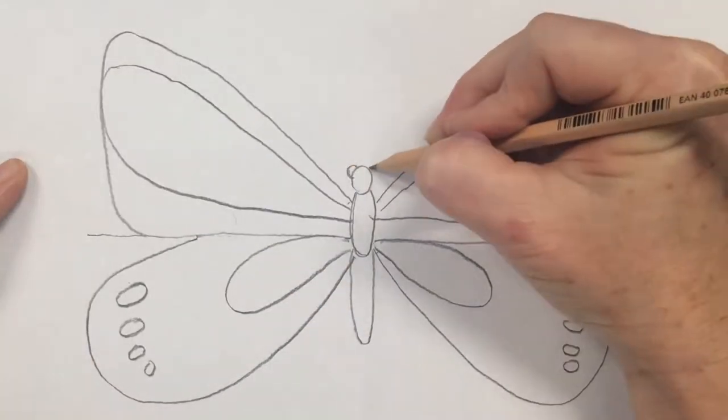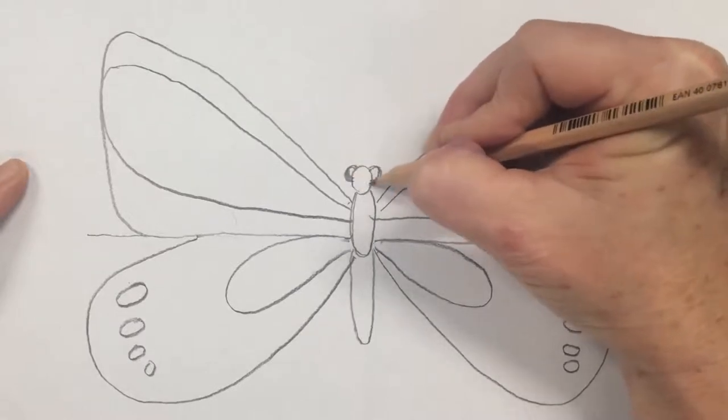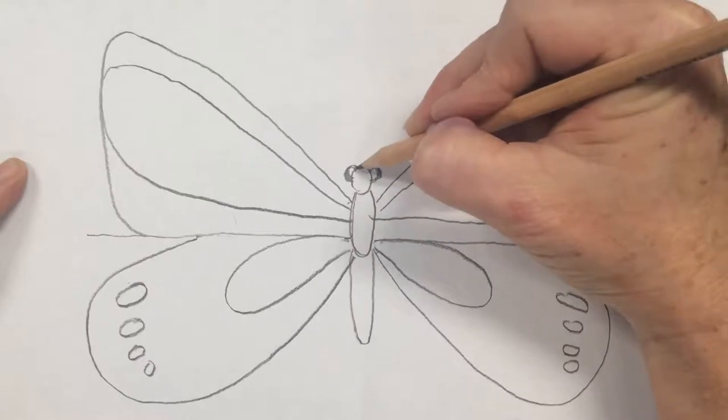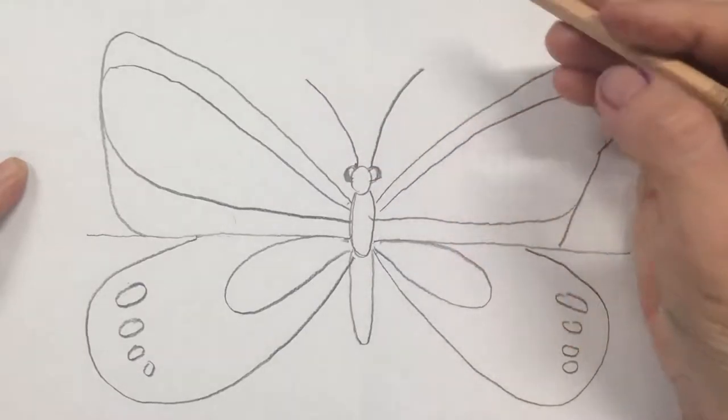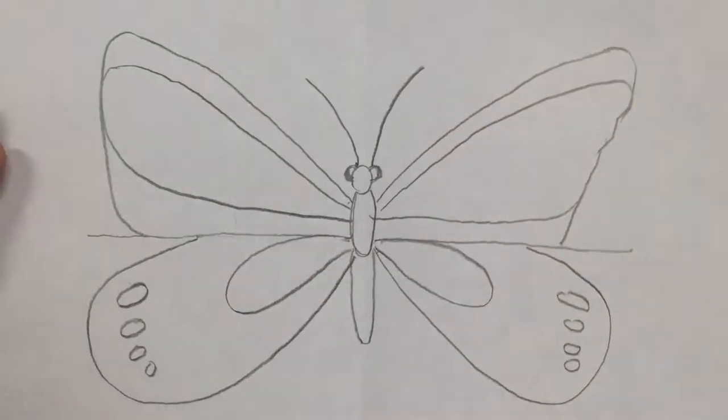Put two eyes at the top, oops, that one's a bit big, big googly eyes, that's all right. And antenna, now that's a good outline, now you can get your colors.